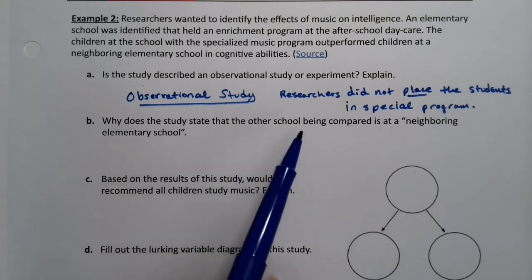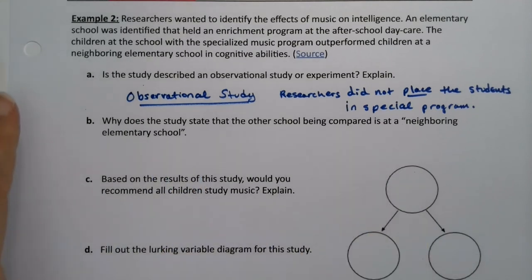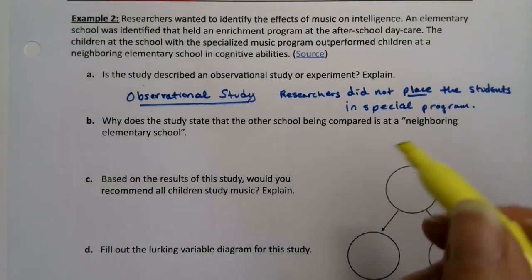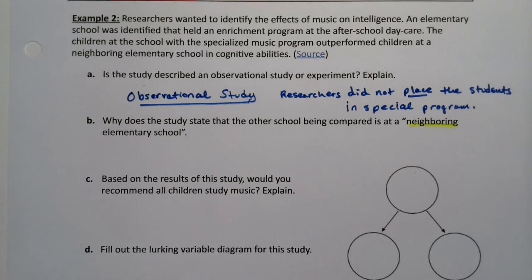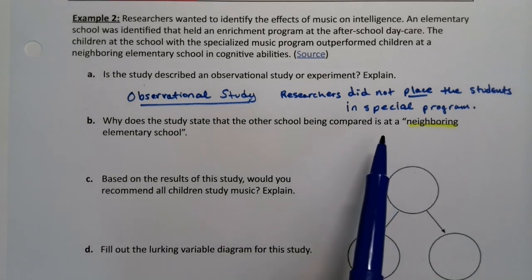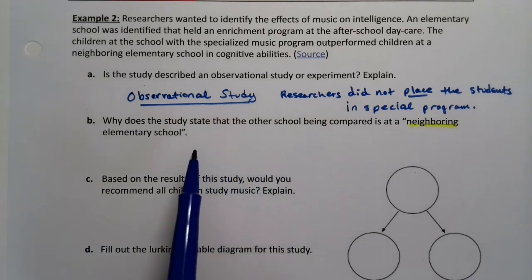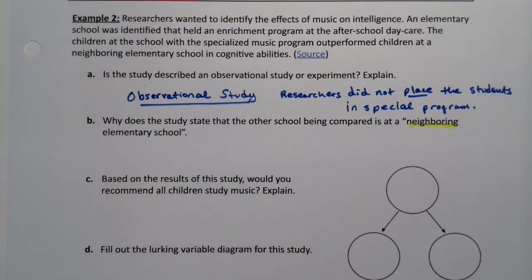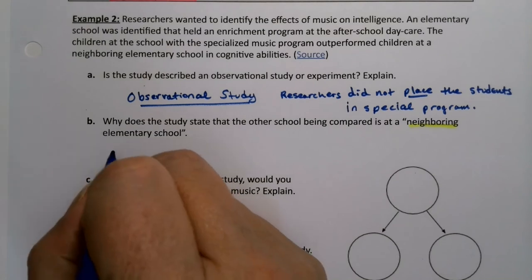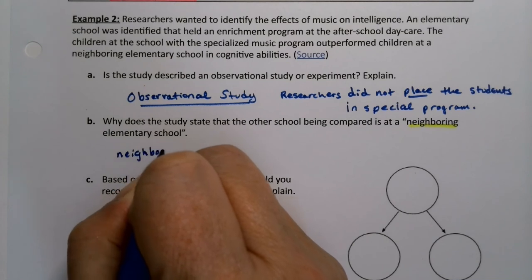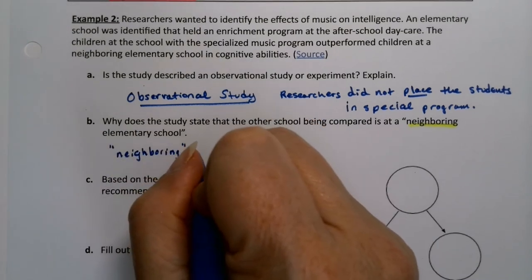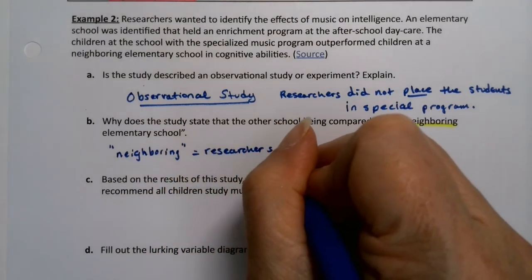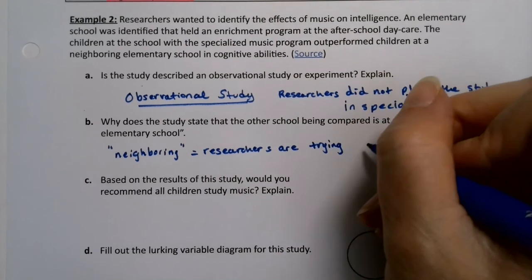So why does the study state that the other school being compared is a neighboring elementary school? The reason they want it to be neighboring is because they want it to be similar in terms of the socioeconomic background, the racial background. One hypothetically thinks that if the schools are close to each other, they're going to have similar outlooks on life. For example, comparing two schools in Detroit would be different than comparing a school in Detroit to a school in San Francisco — they're completely different areas with different makeups on a whole variety of factors. So saying it's neighboring means they're trying to control some of the confounding variables by making them similar groups.